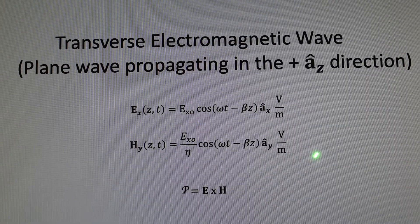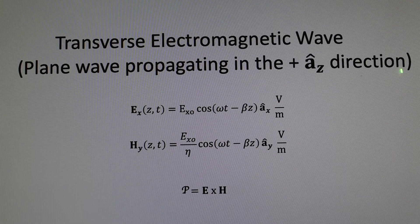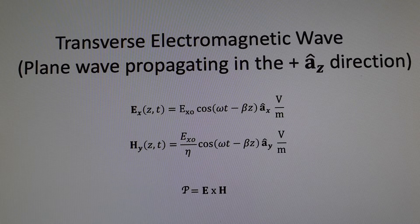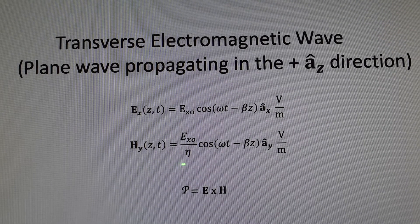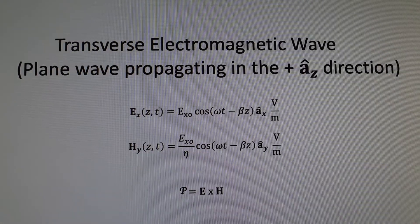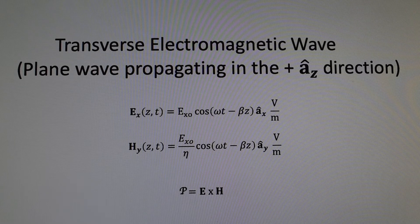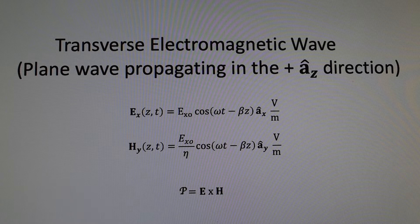Here is a representation of a transverse electromagnetic wave propagating in the positive z direction, linearly polarized in the x direction because the electric field intensity is only in the x direction. Coupled to this electric field intensity is a magnetic field intensity that is in the y direction. I will just focus on the electric field intensity, as the direction of polarization is defined as the direction of the electric field intensity.